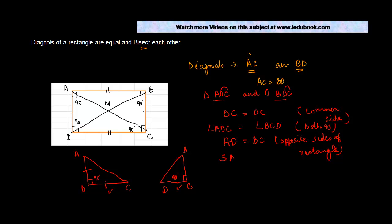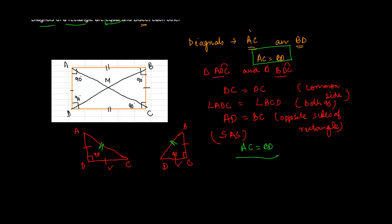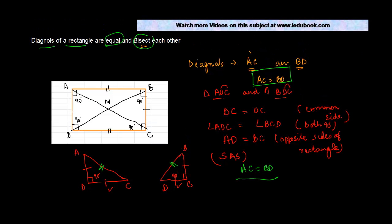By the Side-Angle-Side criterion, we have proved that these two triangles are congruent. By CPCT — corresponding parts of congruent triangles are equal — AC should be equal to BD. Since AC and BD are the two diagonals, we have proved that the diagonals of a rectangle are equal.